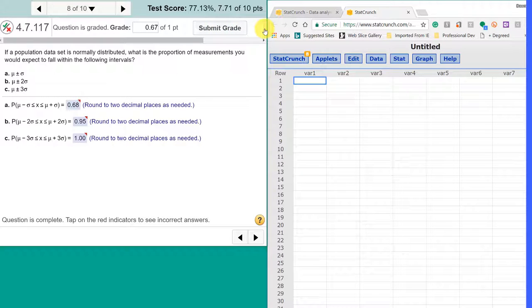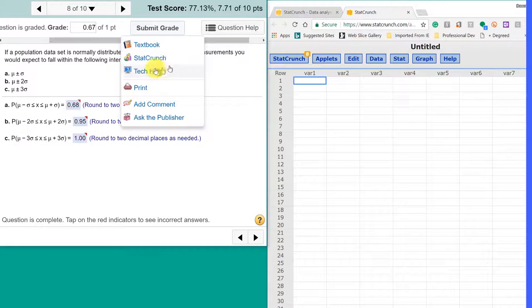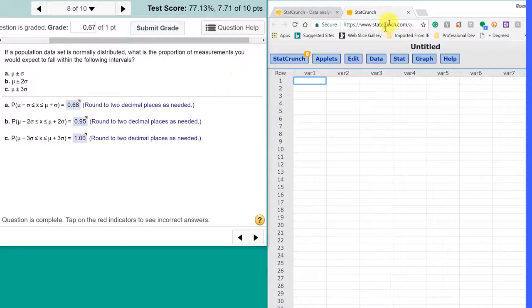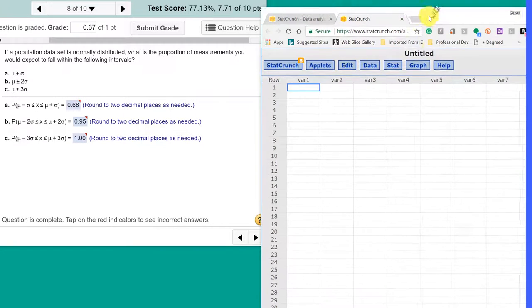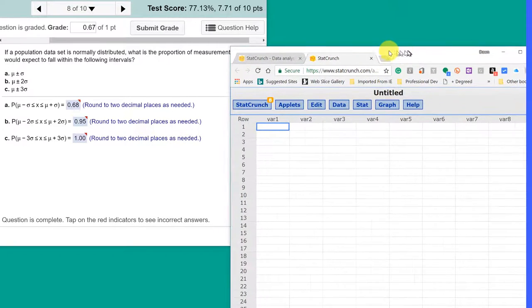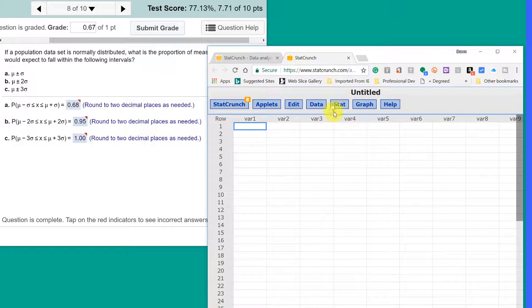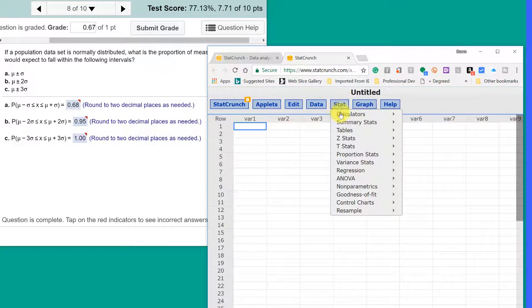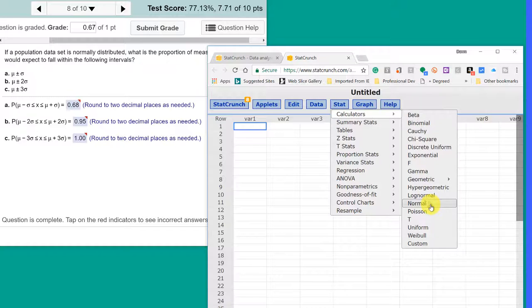Remember, you just go up to question help and open StatCrunch there. I've already got StatCrunch open just to save a little bit of time. And what I'm going to do here is just go into Stat Calculators Normal.